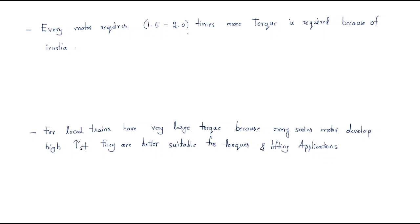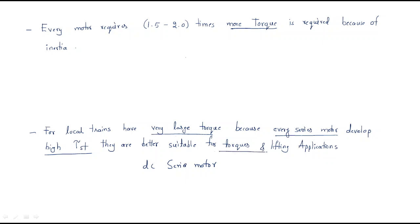Every motor requires 1.5 to 2 times more starting torque because of inertia. Local trains require large torque, and every DC series motor develops high starting torque. That is why DC series motors are used — they are well suited for traction and lifting applications, where high starting torque is required.